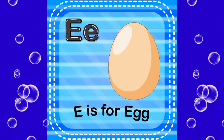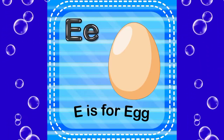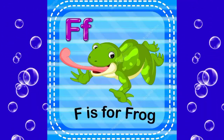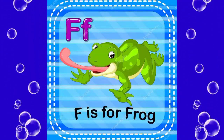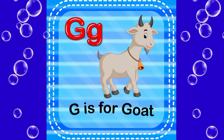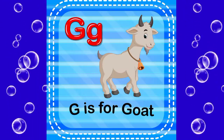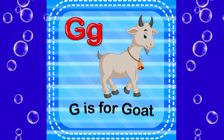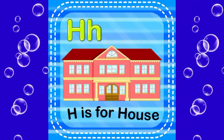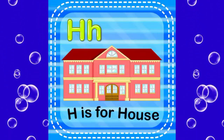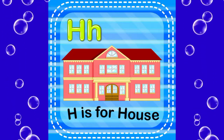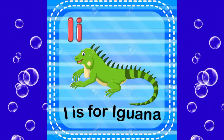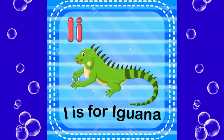E is for egg, F is for frog, D is for goat, S is for house, I is for iguana.